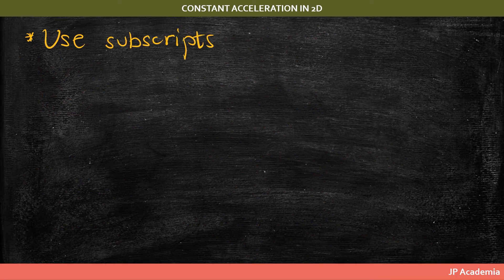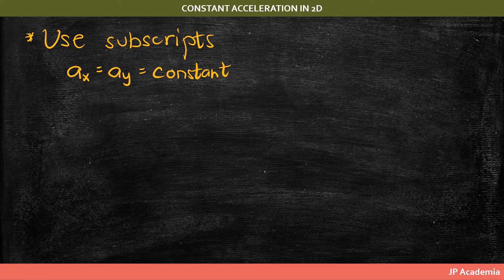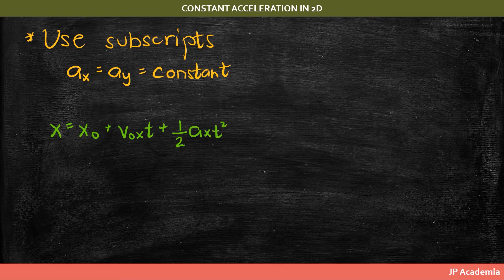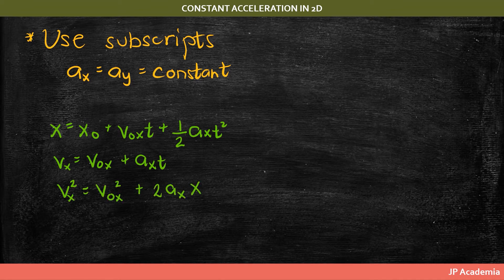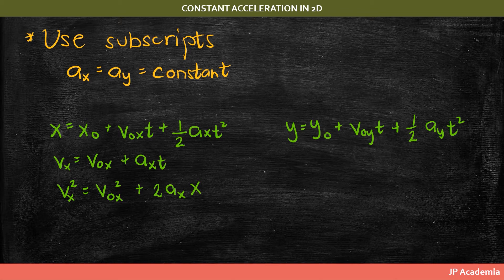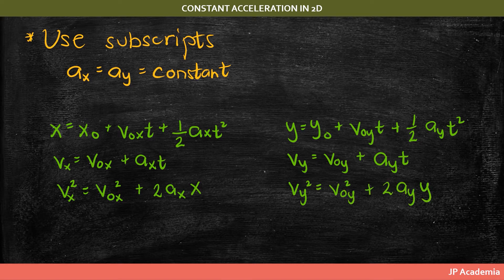I will present the equations used in constant acceleration motion in two dimensions. Always use proper subscripts to indicate if a quantity is associated with the x or y motion, to avoid confusion. Assuming both a sub x and a sub y are constant, we have the position vector x, the velocity v sub x, and another expression for velocity dependent on displacement x. Same for the vertical counterpart: the position vector y, the velocity v sub y, and v sub y squared dependent on displacement y.